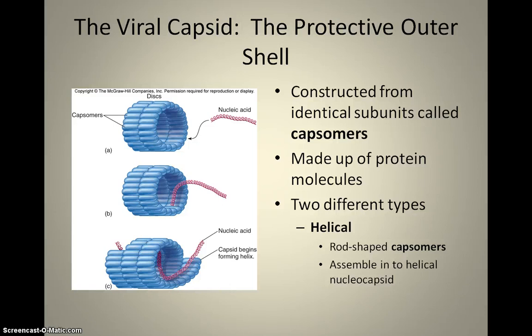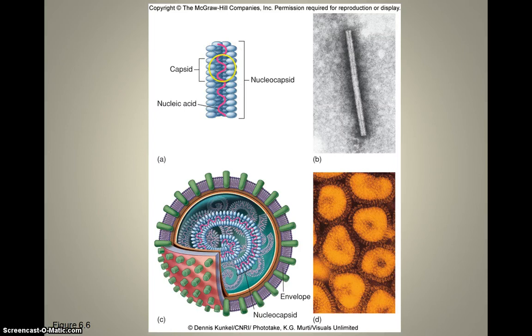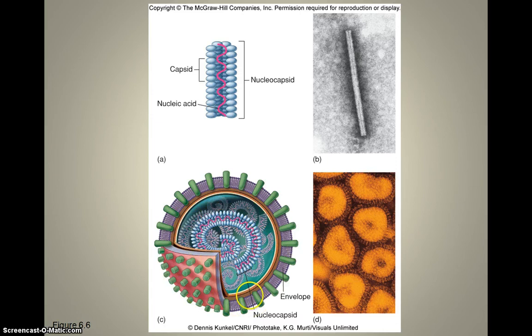The capsid is actually a sequence of capsomers — the proteins are called capsomers — and they form into these helical shapes, making a big long cylinder, with the nucleic acid interior to the cylinder. Here is an example of a helical capsid with the nucleic acid inside, and if we look at it underneath a microscope, you can see that long tube with the nucleic acid inside. In an enveloped helical virus, the helical capsid winds around itself with the nucleic acid inside, and then you have the envelope on the outside.